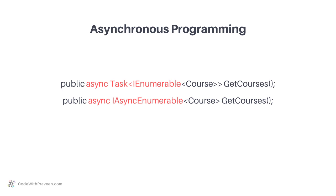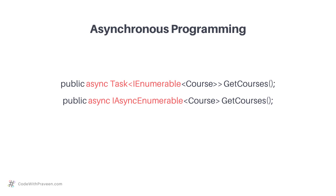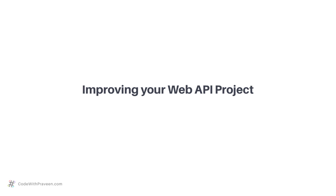You were then presented with the steps to convert your action method to support asynchronous programming for the GetCourses method. This concludes the section on return types. In the next section, improving your Web API project, you will learn how to improve your Web API project using techniques such as AutoMapper, validating your models using attributes, and so on.